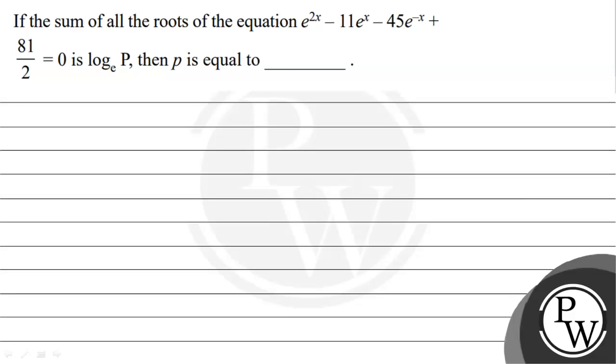Hello, let's read the given question. The question states: if the sum of all the roots of the equation e^(2x) - 11e^x - 45e^(-x) + 81/2 = 0 is log base e of p, then p is equal to what?